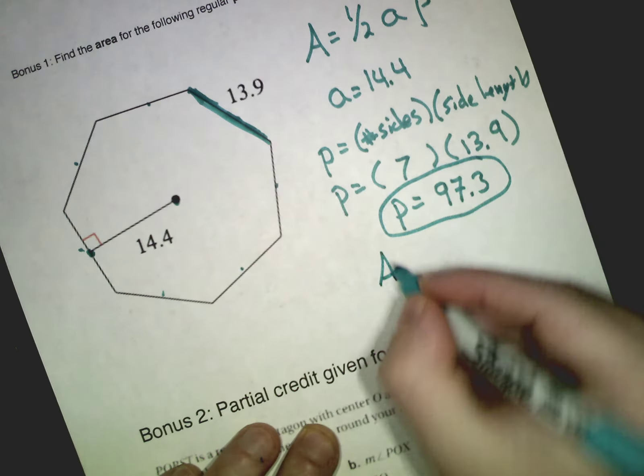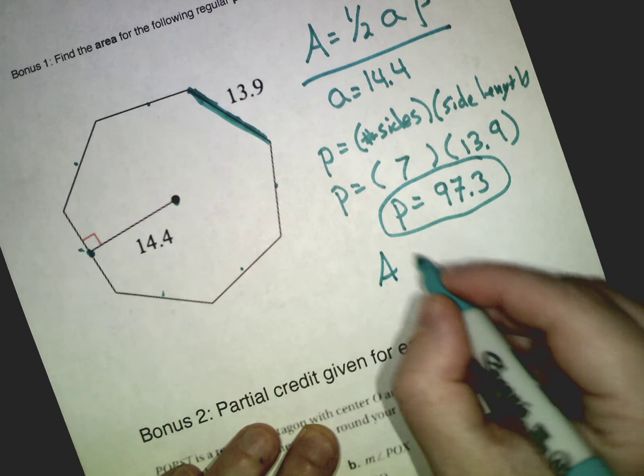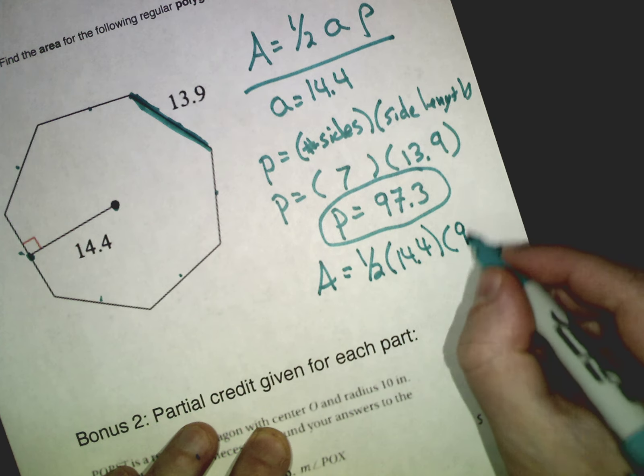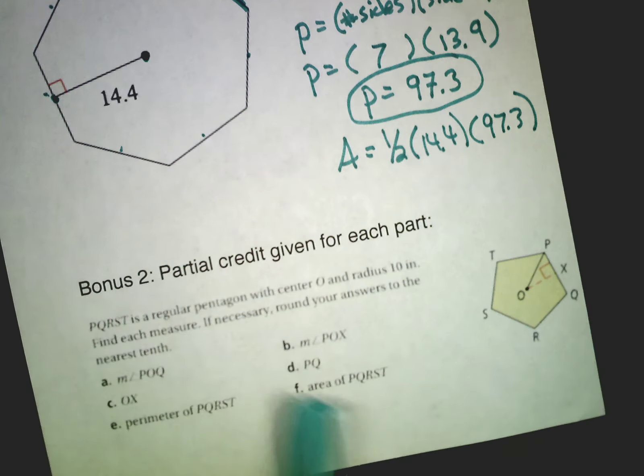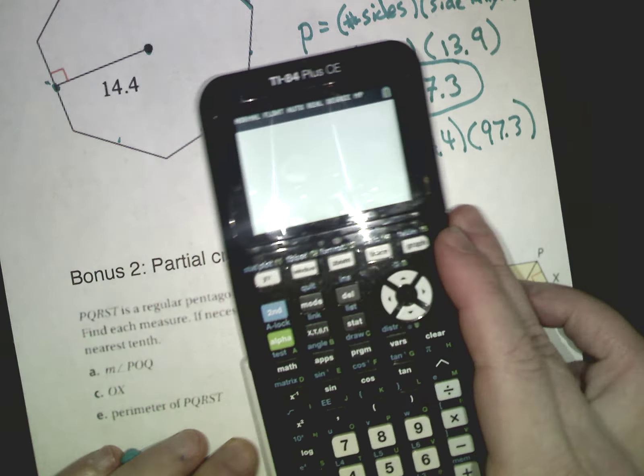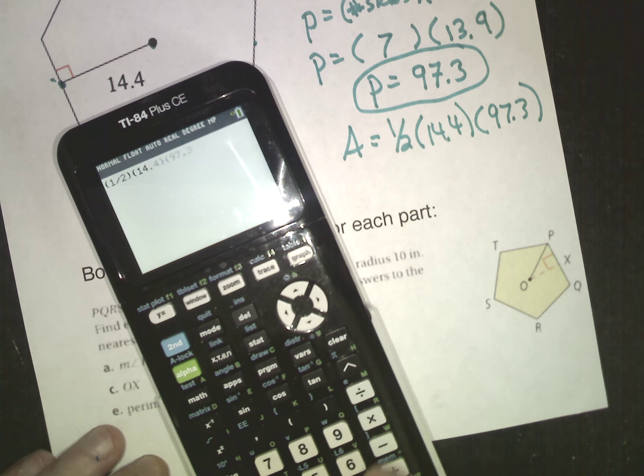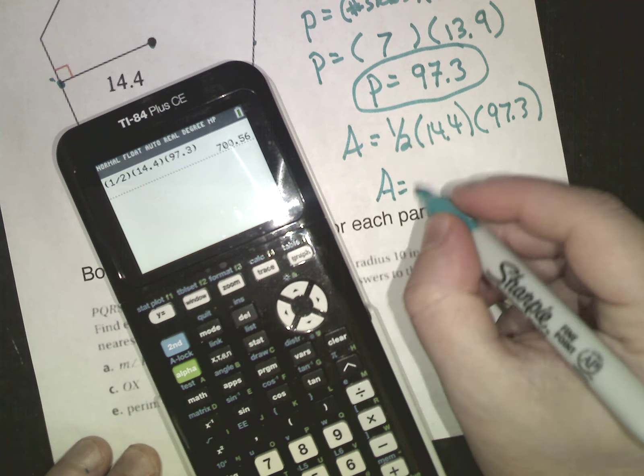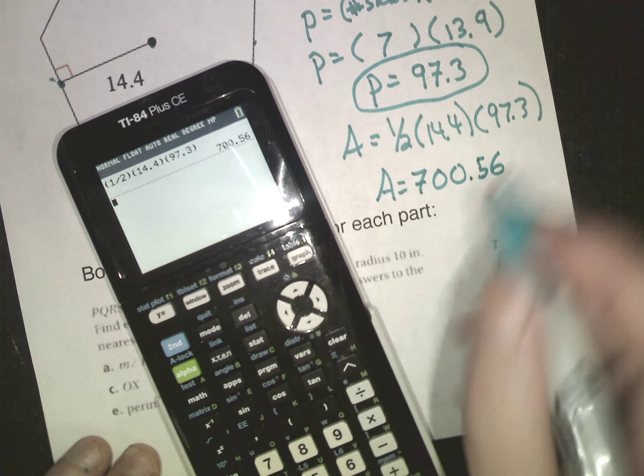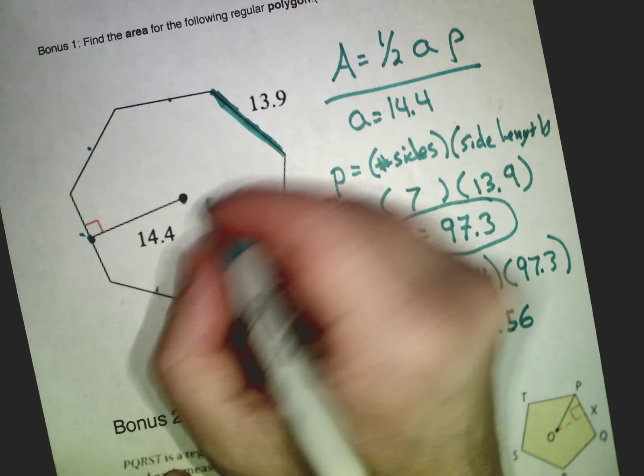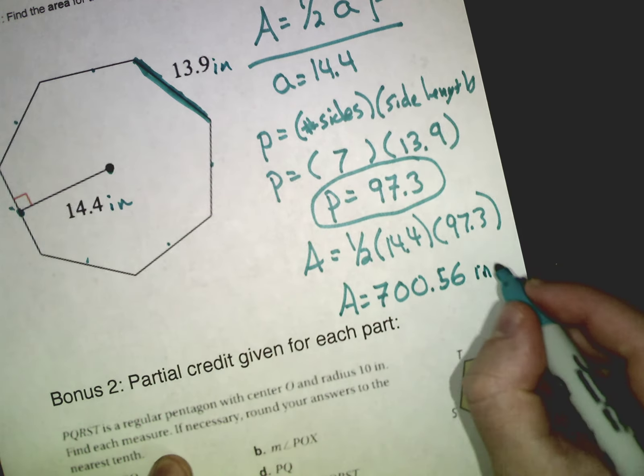Seven times 13.9 will give me the perimeter. Then, what do I do next? I plug everything into this formula. Area equals one half. A, we already determined as 14.4. Perimeter, we already figured out, is 97.3. Let's see. Let's see what the magic calculator tells us. Again, parentheses, one, divided by two. 14.4. 97.3. I get this number, 700.56. So, the area equals 700.56. It should be, they don't, for some reason, don't give any units on this question. I didn't realize, so I'm going to pretend it's inches, right? So, these are inches. So, this would be, then, inches squared. Remember your units.